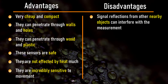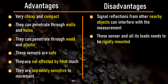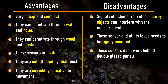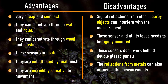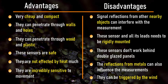Since these sensors rely on the Doppler radar system, signals reflected from other nearby objects can interfere with the measurement, making it less reliable and accurate. These sensors and all their leads need to be rigidly mounted — if the connecting leads are subject to movement or vibration, they will trigger the sensor. These sensors don't work behind normal standard double-glazed panels. Reflections from metals can also influence the measurement. They can also be triggered by wind. You can use aluminium foil to block the microwave signal from the sensor.